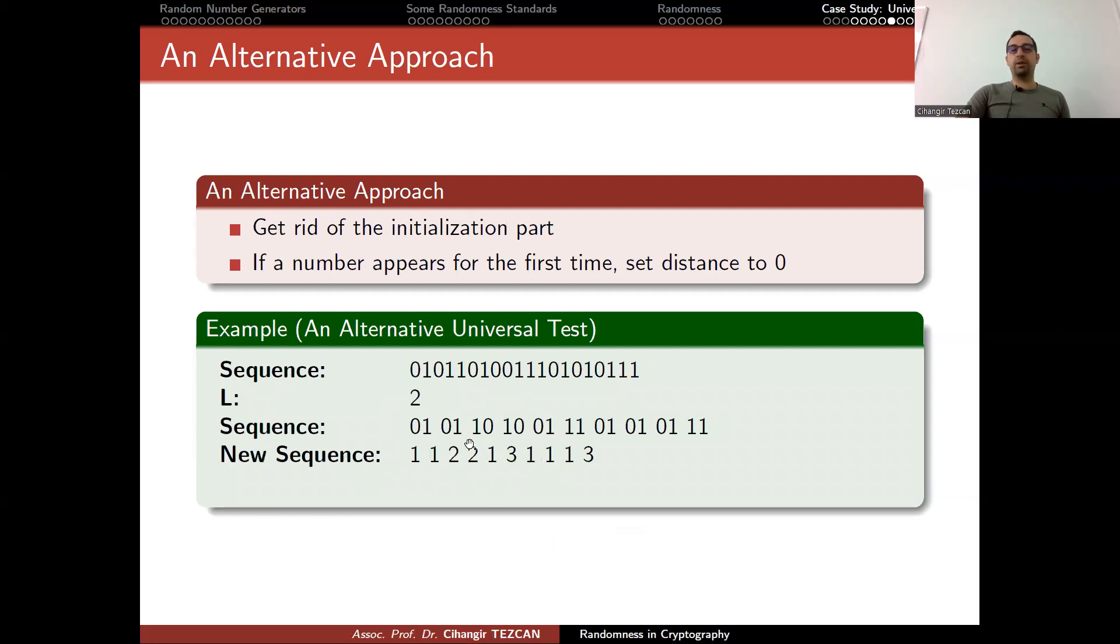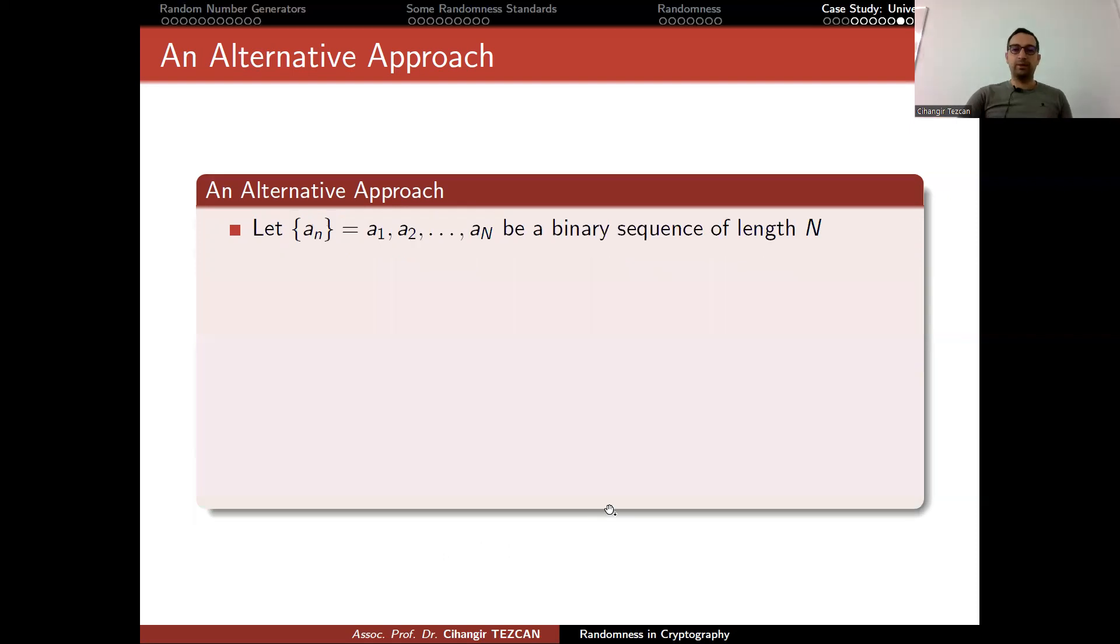Our alternative solution is like this. We have the same sequence. Let's choose the block size 2. Now I don't have an initialization part. I convert all of them into integers. Then I calculate the distance. One appears for the first time, so distance is zero and so on. Now I have to propose a way of measuring the randomness of these distances.